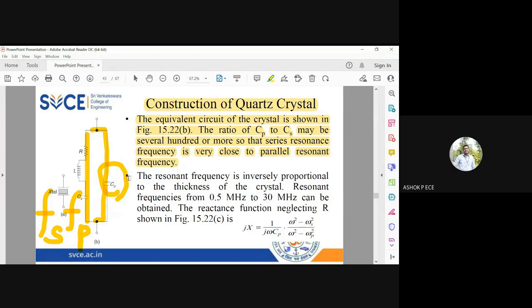Since I have two capacitances cs and cp, I will naturally have two resonating frequencies fs and fp. The resonating frequency is inversely proportional to the thickness of the crystal, so the resonating frequency can vary from 0.5 megahertz to 30 megahertz depending on the properties of the crystal.